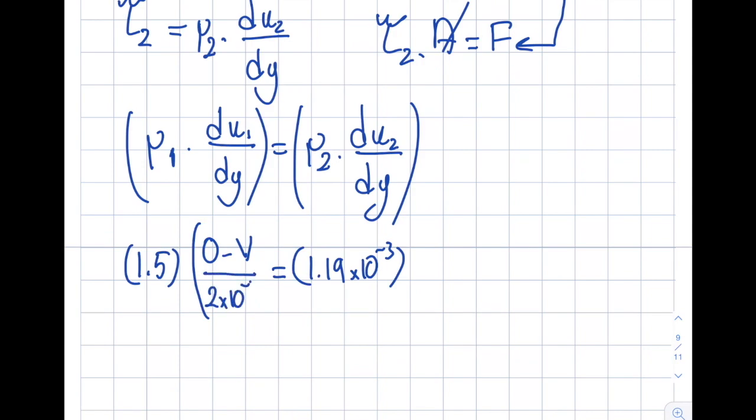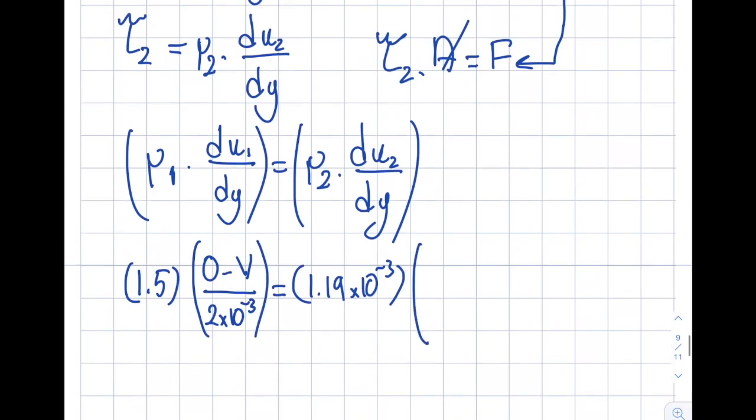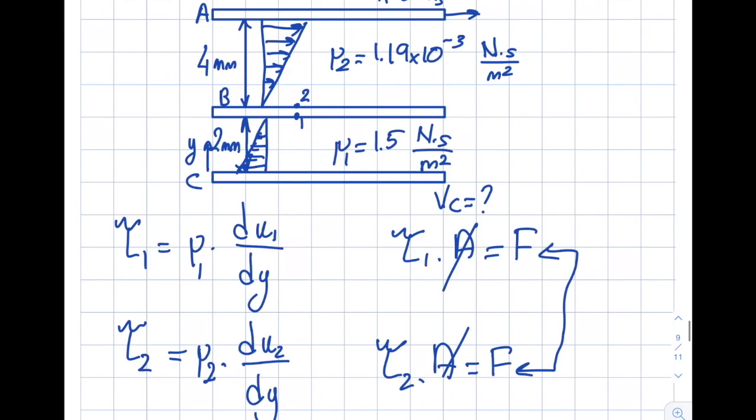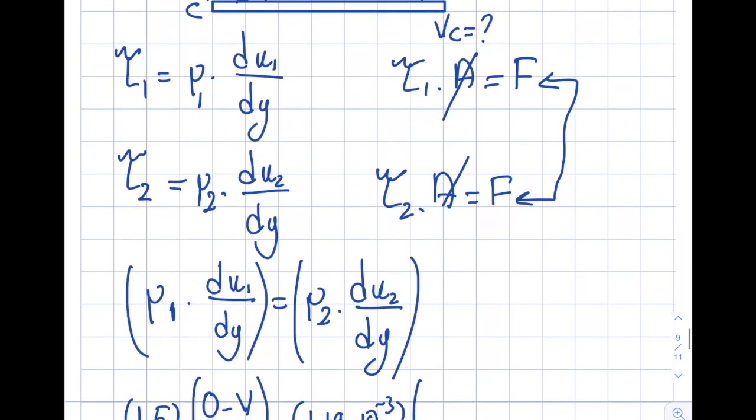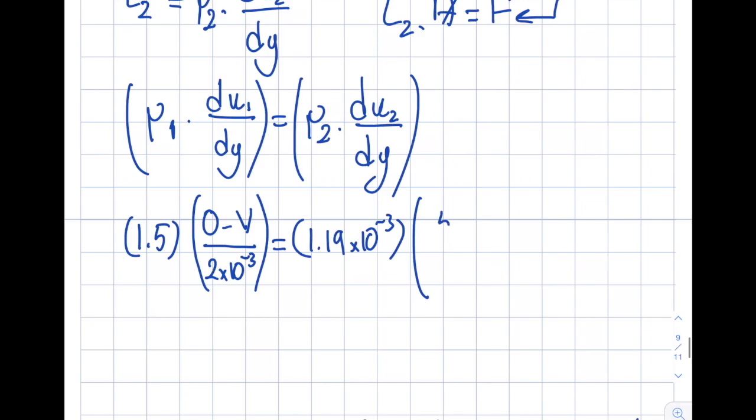And let's look at the second one as well. So what we will get for the second one is I now must use the top minus the bottom because that's how I wrote it over there. So that will be 5 minus 0. So let's write it here. It's going to be 5 minus 0 divided by 4 millimeters. So that's 4 times 10 to the minus 3.